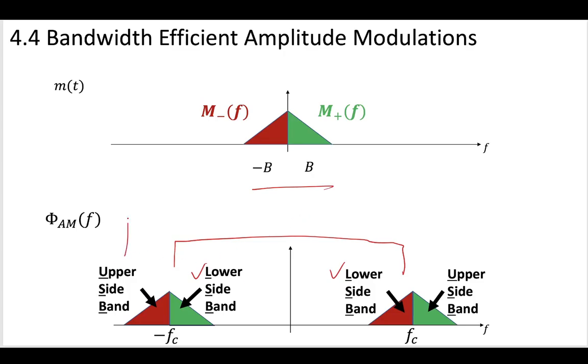Likewise, the upper sideband also contains a red part and a green part, which means that it also contains all of the information contained at that original baseband of your message.